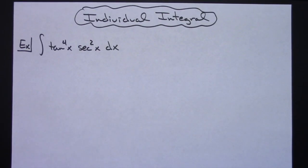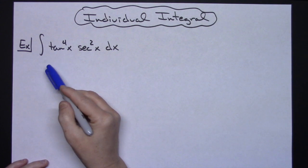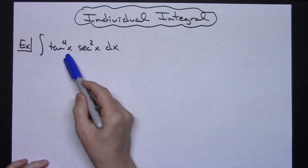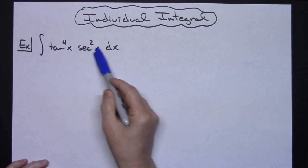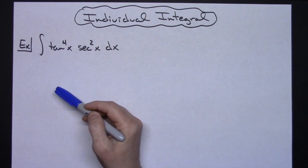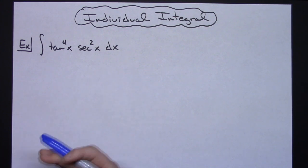In this video I'm going to work out an individual integral problem. We've got the integral of tan^4(x)sec^2(x)dx, and for the most part, this turns out to be just a nice little u-substitution. However,